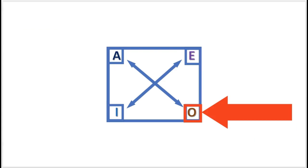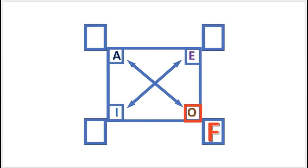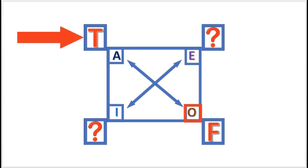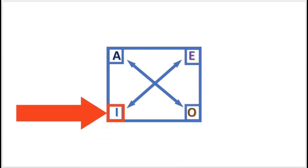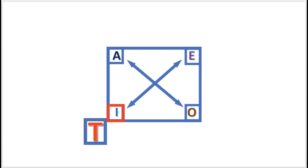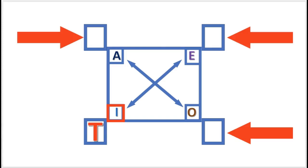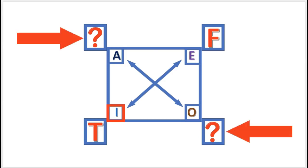Next practice problem: if O is false, what is the truth value of the other propositions? A is true, and E and I are undetermined. Next practice problem: if I is true, what is the truth value for the other propositions? E is false, and A and O are undetermined.